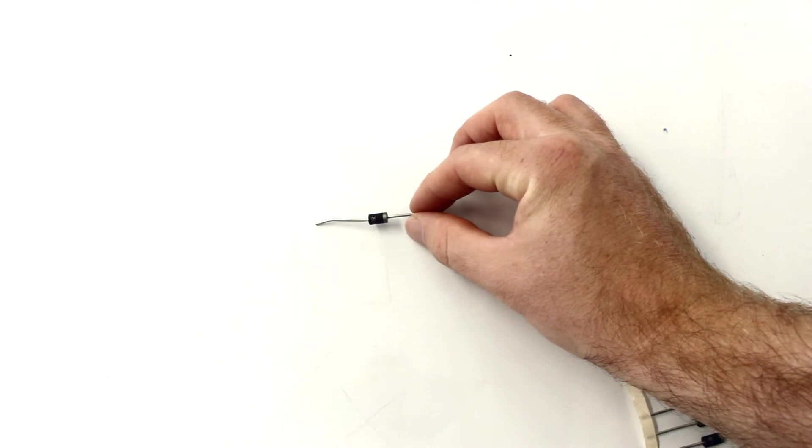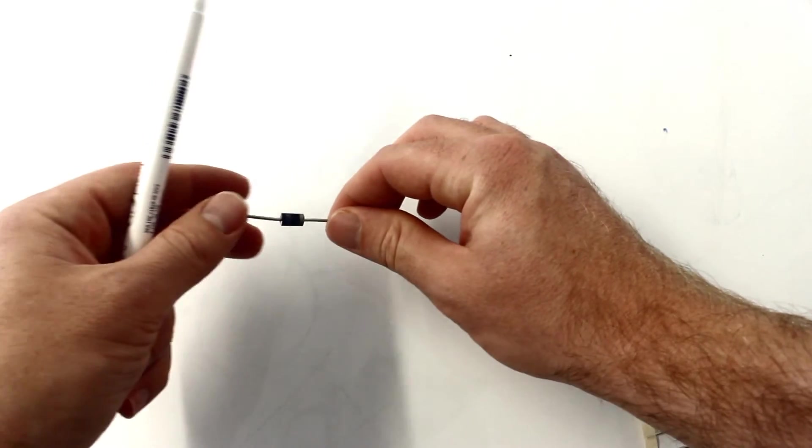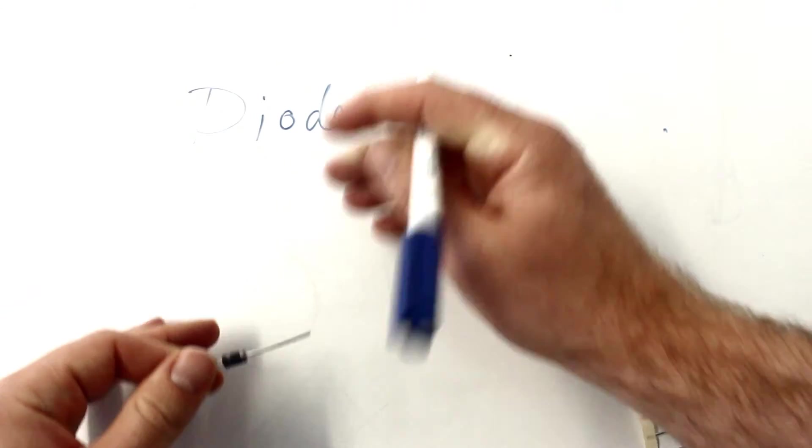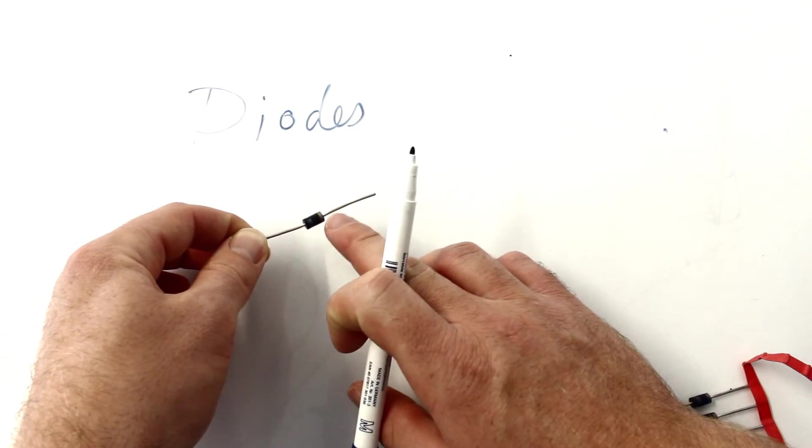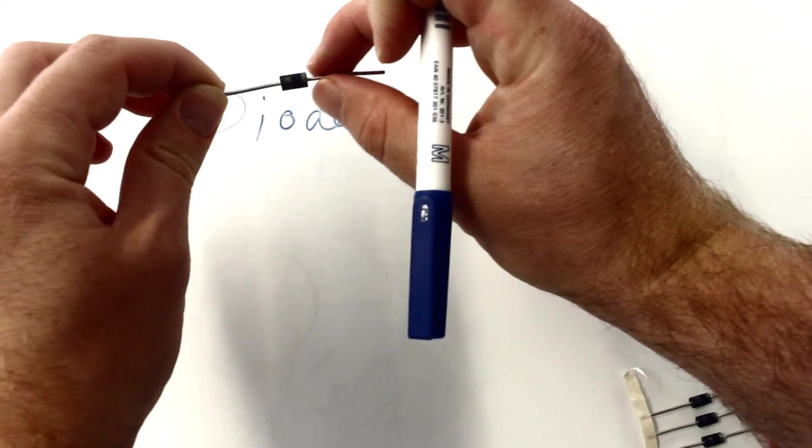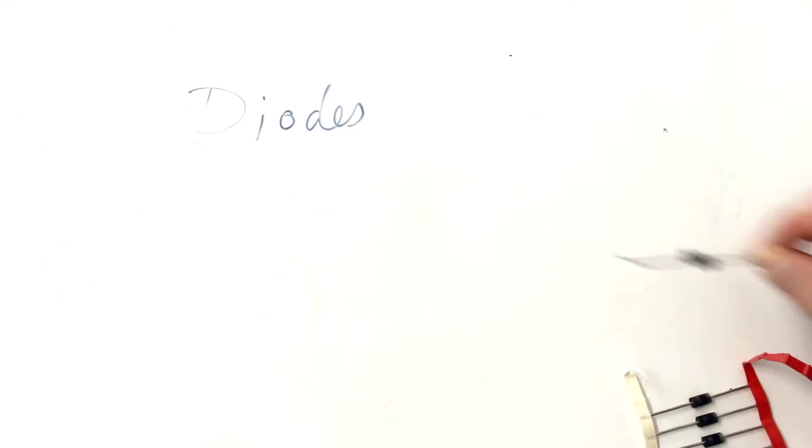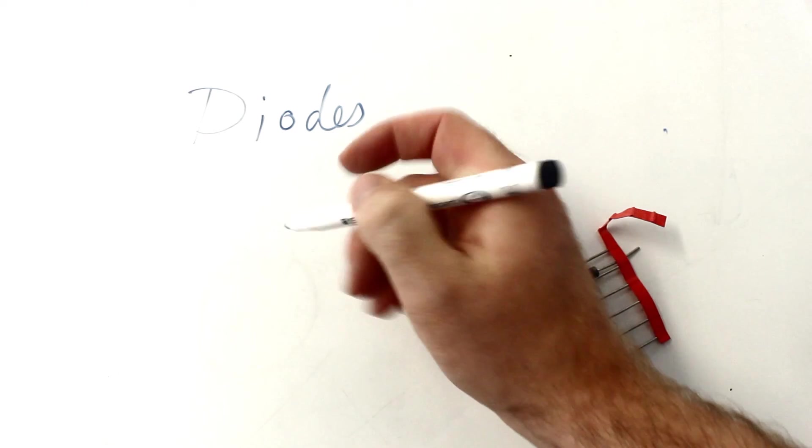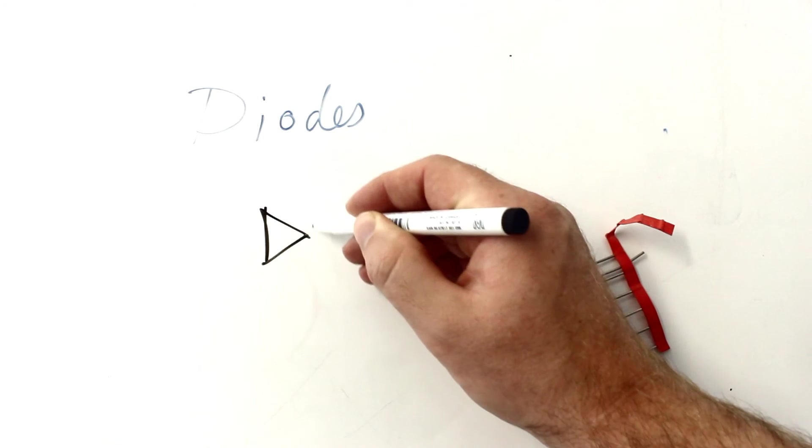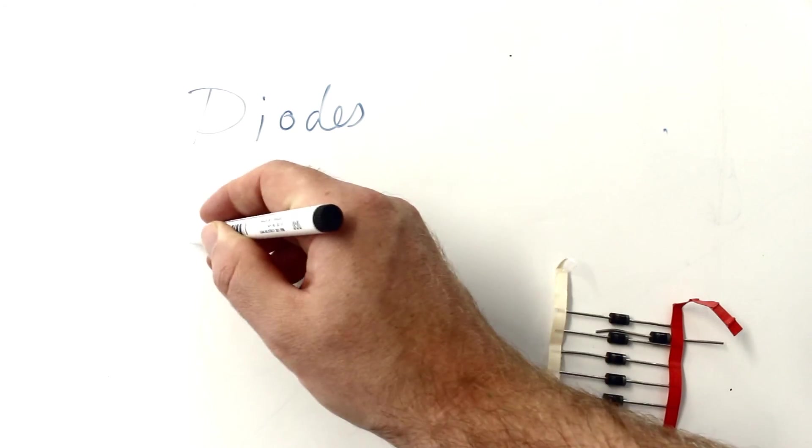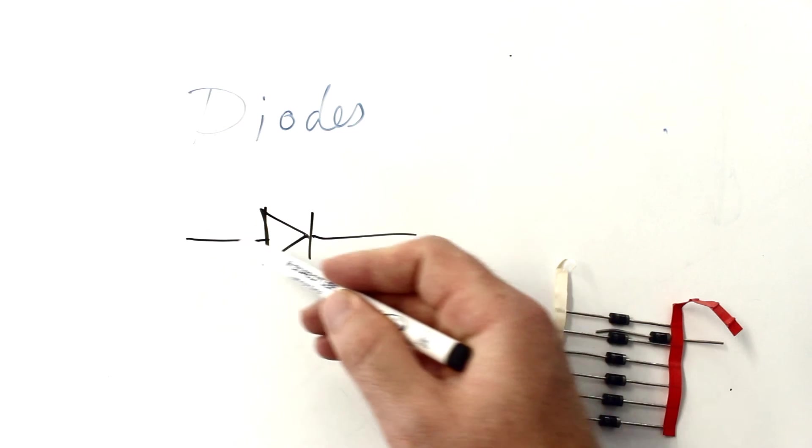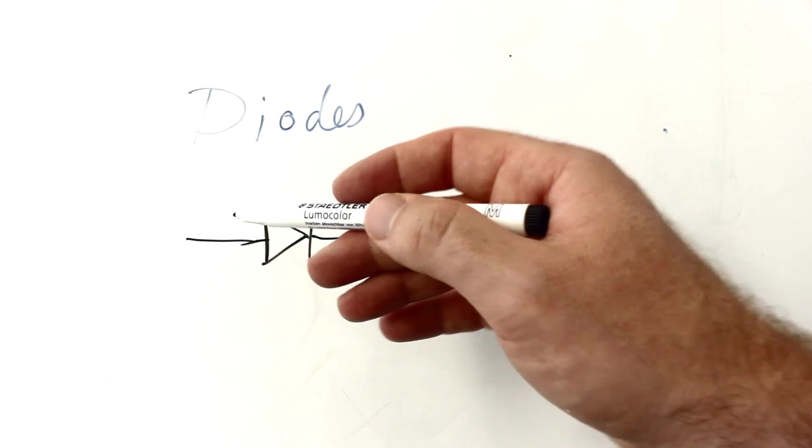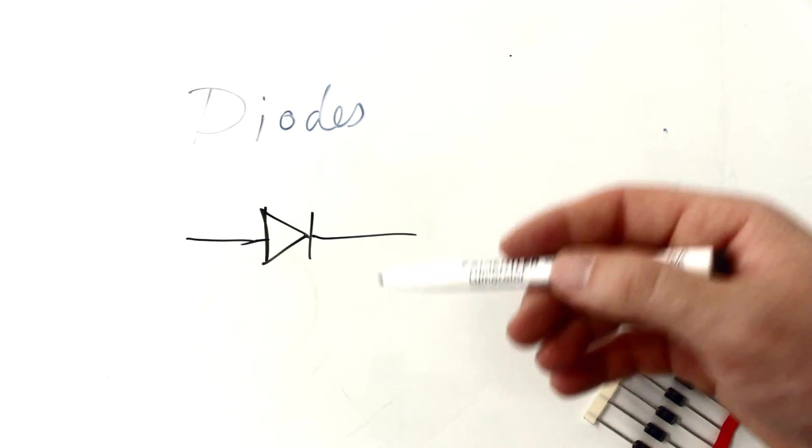So these are diodes. Diodes only let current go through in one direction. Positive will only go towards the silver side there, so you know which way around it is. Symbol looks like this. So it just shows that the current will go in this direction. I think it looks like a play-pause symbol, and therefore the current will go in the play-pause direction.